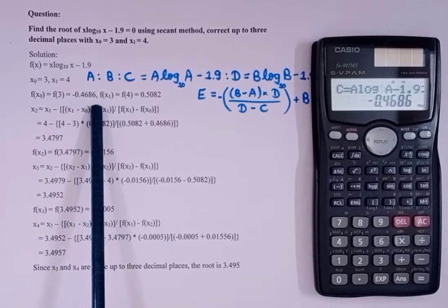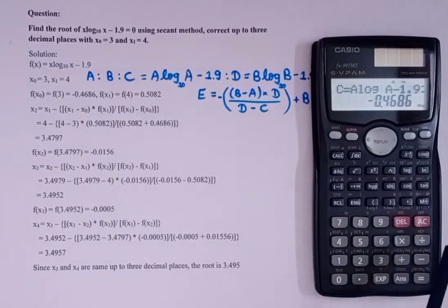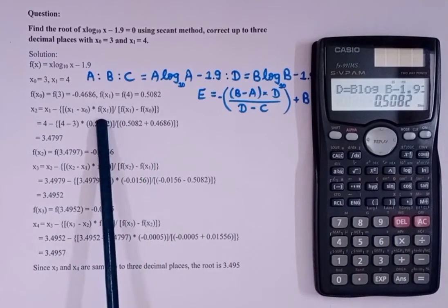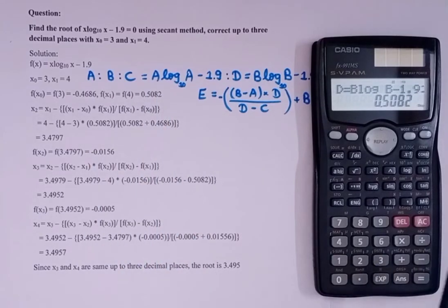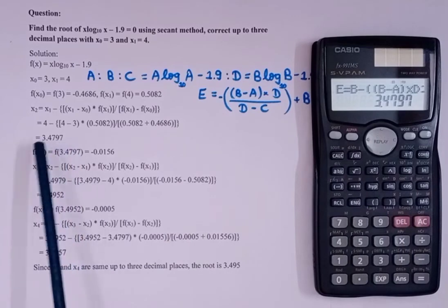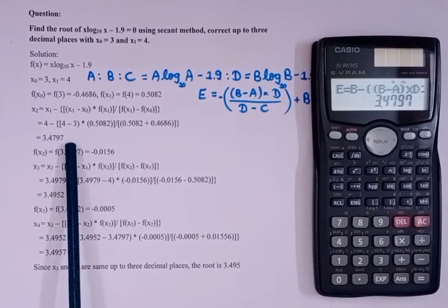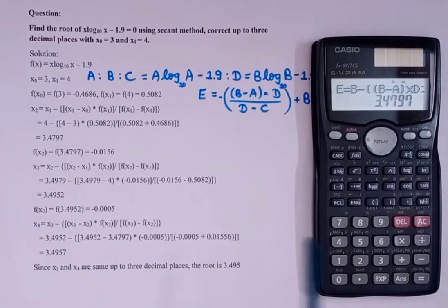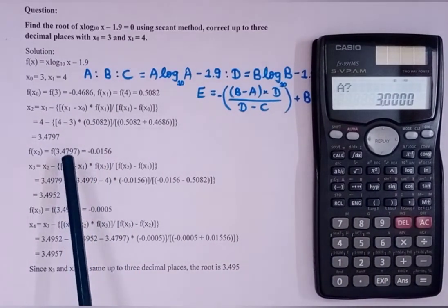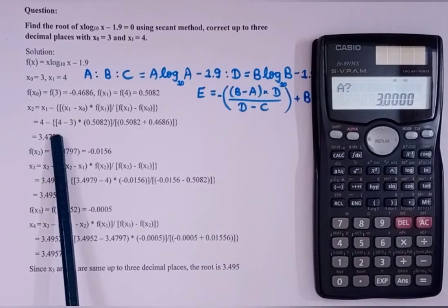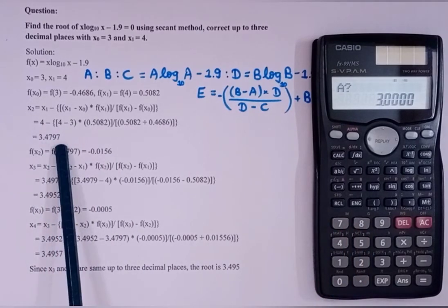We get c, which is f(x₀), as -0.4686. Then press equal to and we get d, which is f(x₁), coming as 0.5082. Press equal to again and we get e, which is x₂ = 3.4797.